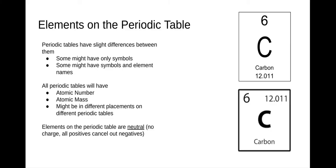Elements on the periodic table are considered neutral, which means they're not charged — they don't have any positive or negative charge left over. So all positives will cancel out all negatives. Let's look at where the atomic number, the symbol, and the atomic mass are on these elements.